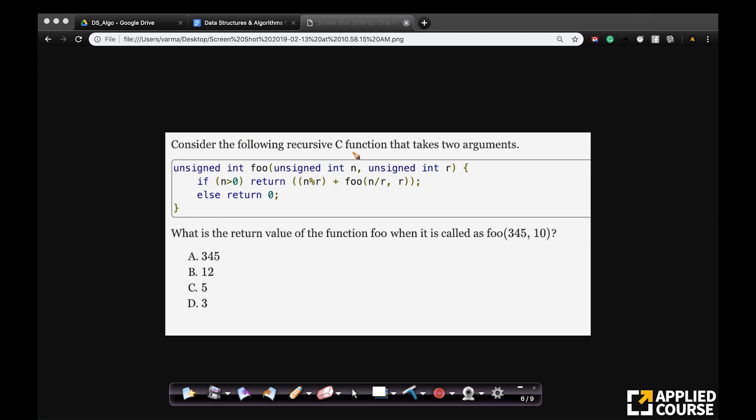This is a fairly simple question. Imagine we have this snippet of code in C which takes two arguments. There are two arguments here, n and r. This function is called foo. It returns integer.